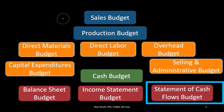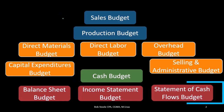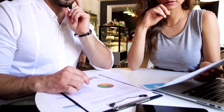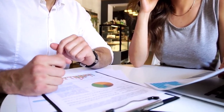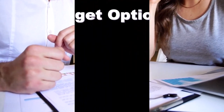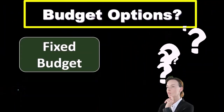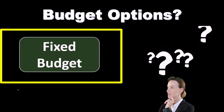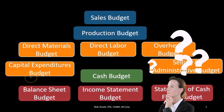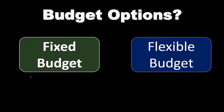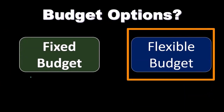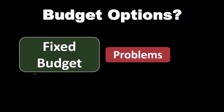So for the master budget process we start with the sales budget and end with the budgeted financial statements — the budgeted balance sheet, income statement, and statement of cash flows. In terms of budget options, we typically have the fixed budget, which we concentrated on last time, and then the flexible budget, which we're going to concentrate on more here.